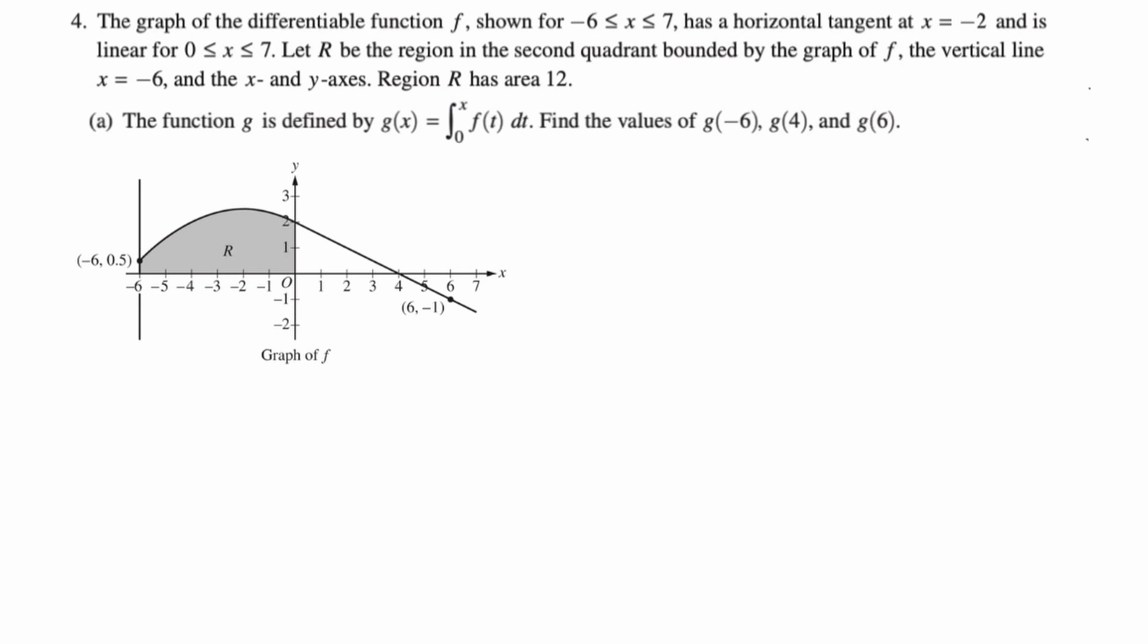So the graph of the differentiable function f is shown for negative six to seven, has a horizontal tangent line at x equals negative two, and is linear for zero to seven. Let r be the region in the second quadrant bounded by the graph of f, the vertical line x equals negative six, and the x and y axes. Region r has area 12.